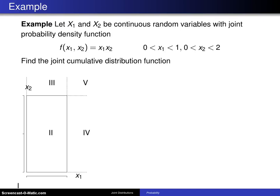Here's an example of computing a joint cumulative distribution function. Let x1 and x2 be continuous random variables with joint probability density function f of x1, x2 equals x1 times x2 for x1 between 0 and 1 and x2 between 0 and 2. Well, here is a picture.